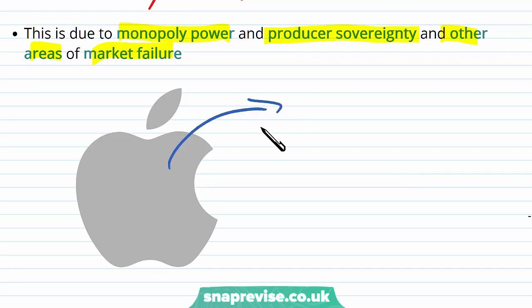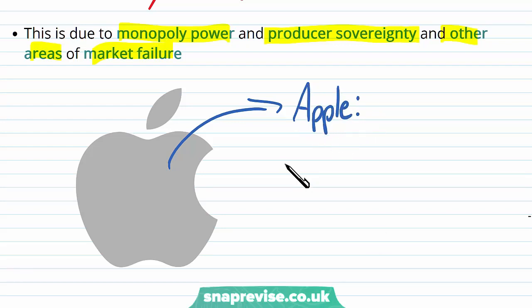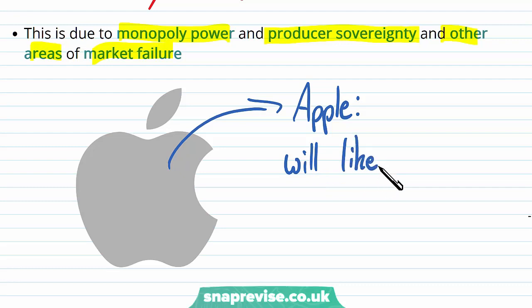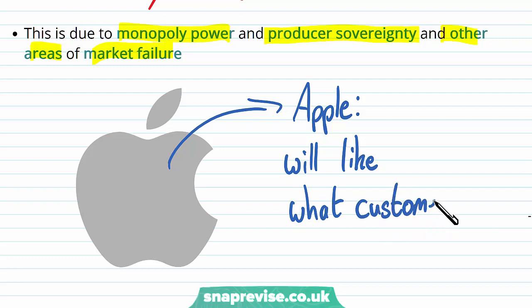Take Apple as an example of producer sovereignty. Apple produces what they think customers will like, as opposed to directly what customers want. Apple can do this because they are so large — they make assumptions about what people like as opposed to what they actually want.